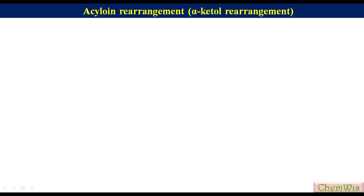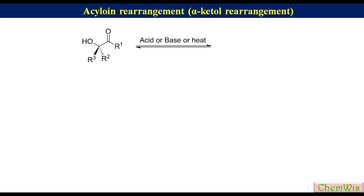In the last lecture we studied acyloin condensation. In continuation, today we are going to study acyloin rearrangement, also called alpha ketol rearrangement. Basically, it is an acid-, base-, or heat-induced 1,2-migration of an alkyl or aryl group in an alpha hydroxy ketone or aldehyde to produce an isomeric alpha hydroxy ketone or alpha hydroxy aldehyde.